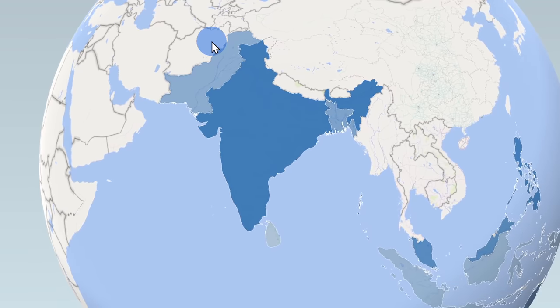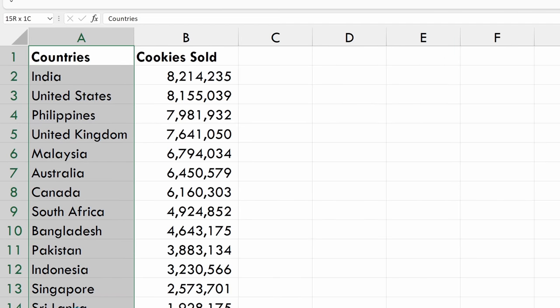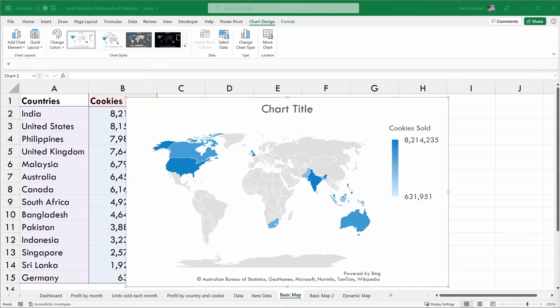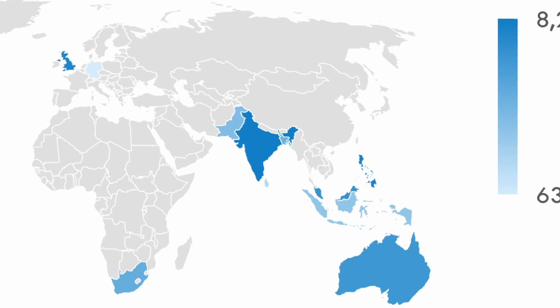Today, I want to show you how you could turn your data in Microsoft Excel into a dynamic map. At the Kevin Cookie Company, we have a ton of sales data by country, but it's really hard to make sense of it. It'll really help to visualize the data if I could turn that into a map. And wow, look at that — it appears that India is one of our top markets. It's a good thing that we greenlit those cardamom cookies.